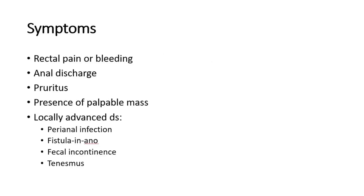The main symptoms of anal cancer are rectal pain or rectal bleeding, occurring in around half of patients. Other symptoms may include anal discharge, pruritus, or the presence of a palpable mass. Perianal infection and fistula-in-ano can be seen in locally invasive disease. If the anal sphincters have been involved, fecal incontinence and tenesmus can also occur.